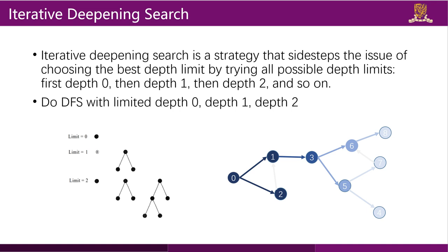Now let's talk about two slightly more complex search algorithms. The first is iterated deepening search (IDS). Its strategy sidesteps the issue of choosing the best depth limit by trying all possible depth limits — first DFS with depth limit 0, then depth limit 1, then 2, and so on.